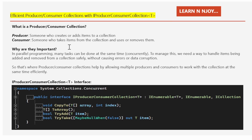First of all, what is a producer-consumer collection? A producer is someone who creates or adds items to a collection — imagine a factory worker adding products to a conveyor belt. A consumer is someone who takes items from the collection and uses or removes them — imagine another worker taking products off the conveyor belt to pack them into boxes.